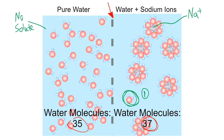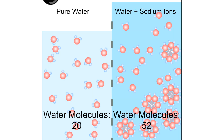Once osmosis starts in the simulation, the water molecules on the left move and diffuse across the cell membrane from a high concentration of water on the left to a low concentration of water on the right. At the end of the simulation, lots of those water molecules have diffused from left to right, and now there's pretty much an even number of free water molecules on each side — about 20 on the left and 16 on the right.